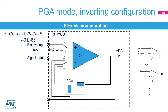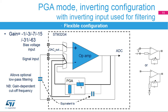By using this configuration, it is possible to shift the bias voltage of the input signal with an AC coupling capacitor. It can also be used as a non-inverting amplifier with a gain of 2, 4, 8, 16, 32, or 64 with bias to a non-ground voltage. The op-amps also support external connections on outputs and on the inverting input for this PGA mode, enabling the connection of an external capacitor to add low-pass filter characteristics.